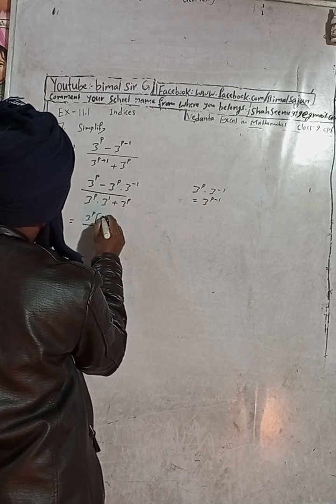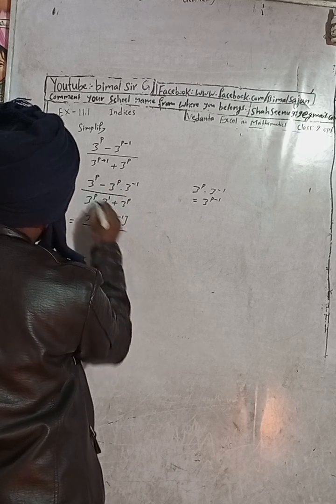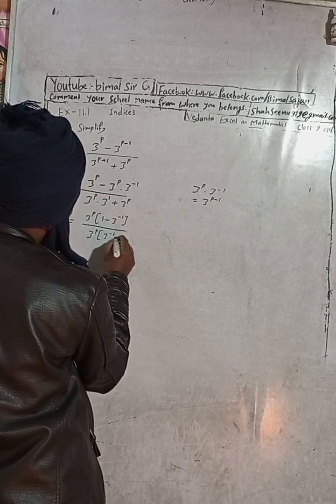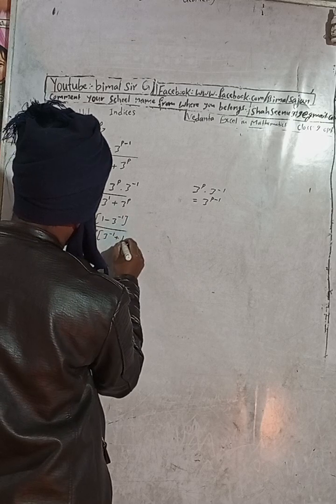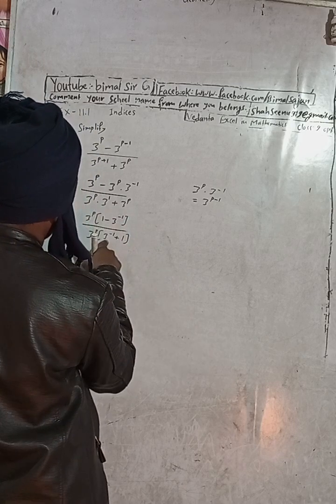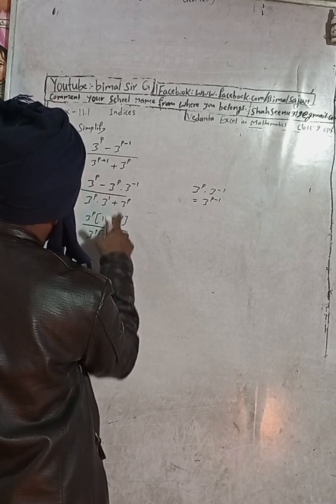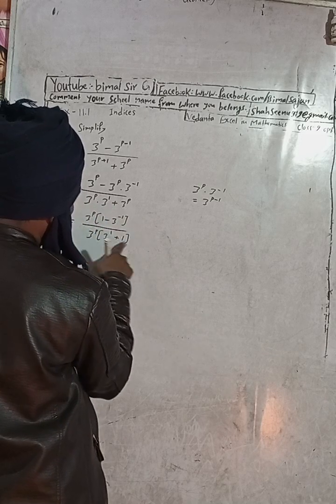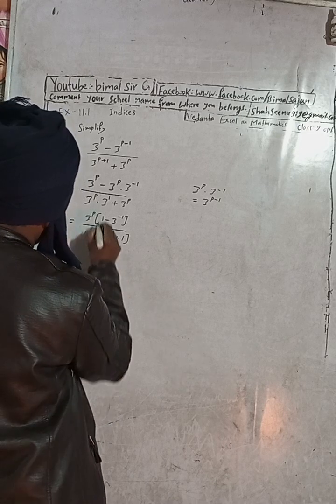Now here this 3 to the power P will be common. And here 1 minus 3 to the power minus 1, and this is here 3 to the power P, 3 to the power minus 1 plus plus here 1. Because this is your common, this is 3 to the power, so this is 3 to the power plus 1, plus 1, and then plus 3 to the power P is taken outside, so this is plus 1.